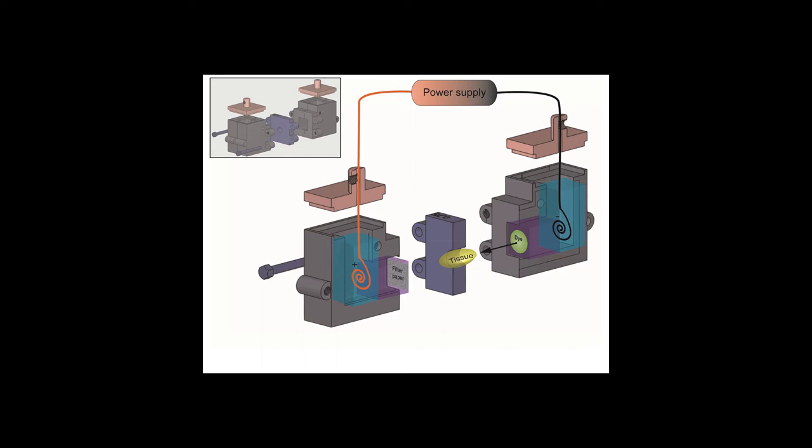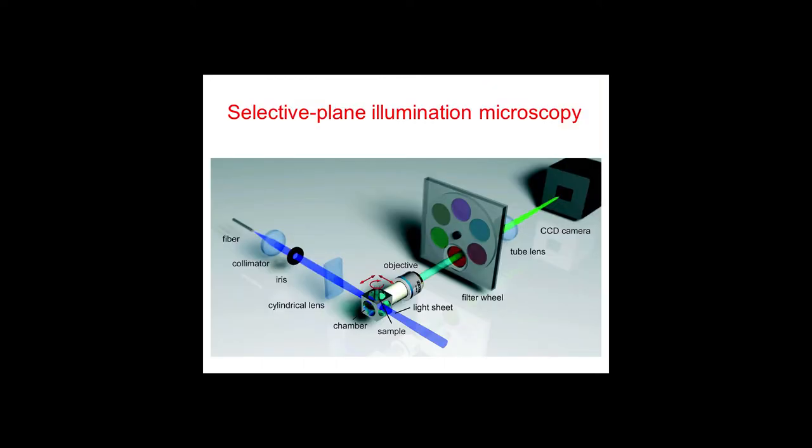And then how do you actually acquire the 3D images? We do so by doing selective plane illumination microscopy, or SPIM. So, maybe, how many of you know how the SPIM works?